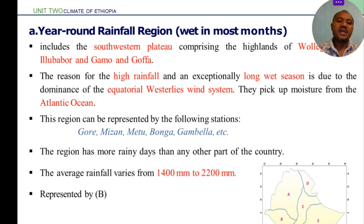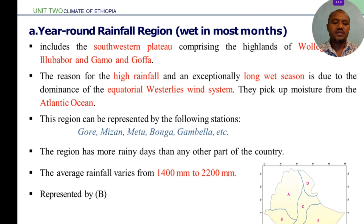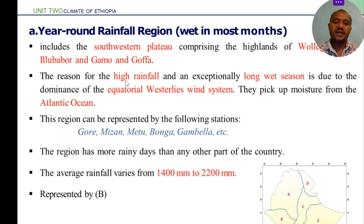It comprises the islands of Wollega, Ilubabor, Gamo, and Gofa. The reason for high rainfall and an exceptionally long rainy season is due to the dominance of the equatorial western wind system.